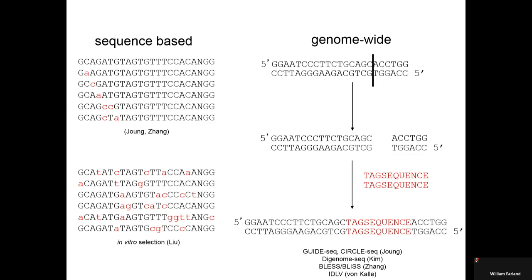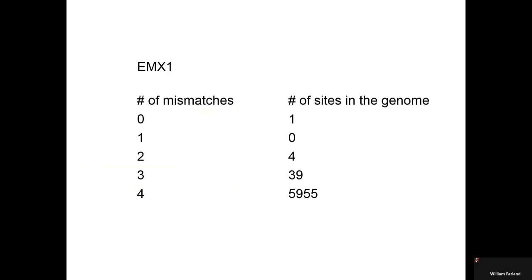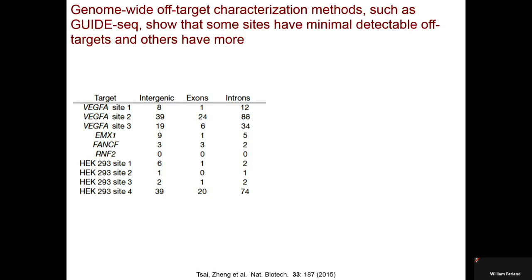There are a bunch of different genome-wide off-target methods from Keith Jung's lab, Jin-Soo Kim, Feng Zhang, Christophe Van Kalle, many others. They basically all work on the same principle. You basically take either cells or genomic DNA from cells, expose it to your Cas9 guide RNA complex that you're interested in studying, so that Cas9 will hit the on-target site and whatever off-target sites exist in that genome and create double-strand breaks.